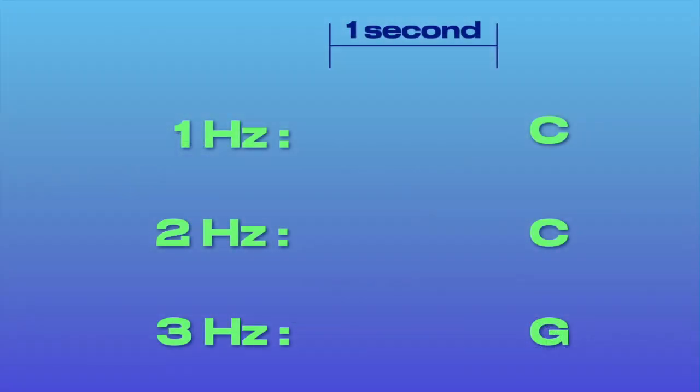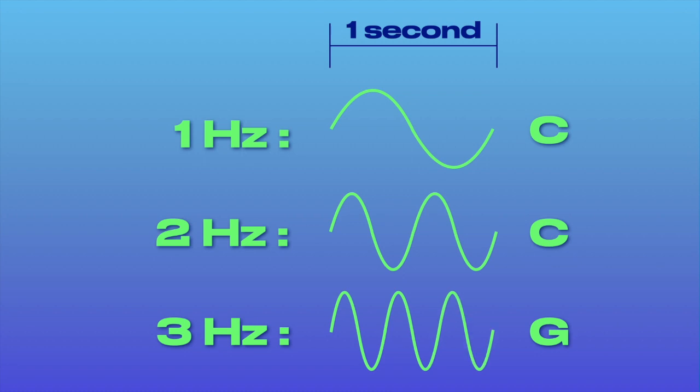We can also compare C at 1 Hz with its perfect fifth note of G, which enters the series at the third harmonic, or 3 Hz, which is 3 waves per second.